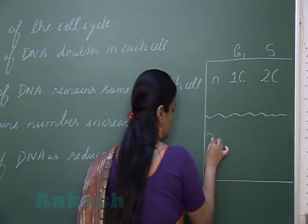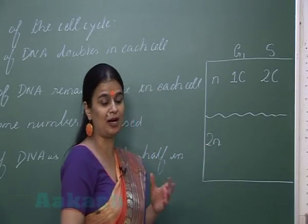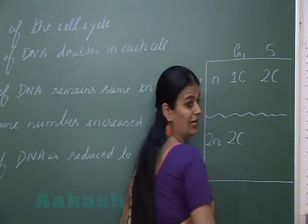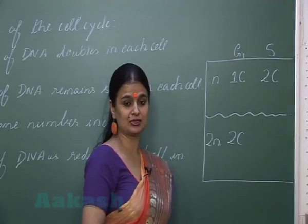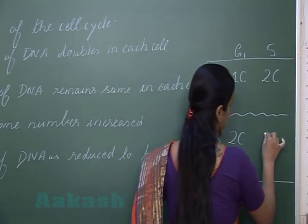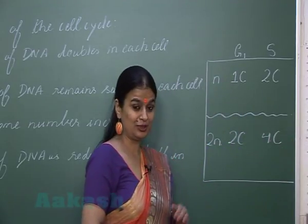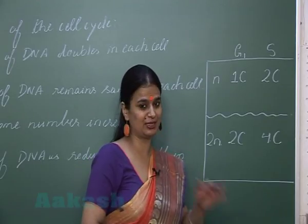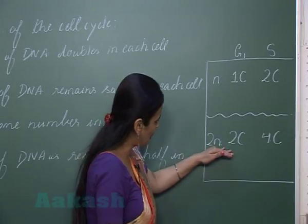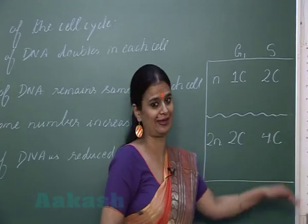Similarly, in a diploid cell, the amount of DNA in G1 phase is 2C. In S phase, DNA duplication occurs, so the amount changes from 2C to 4C. DNA becomes double, but the number of chromosomes remains the same, so the diploid cell remains diploid even in S phase.